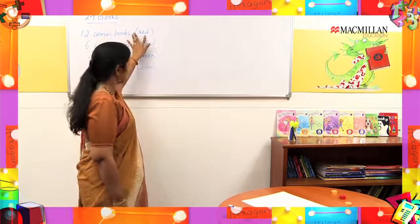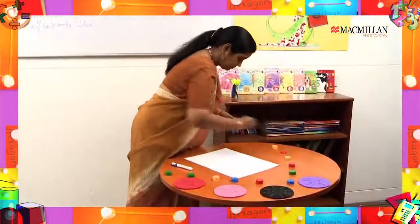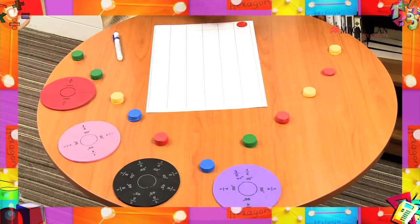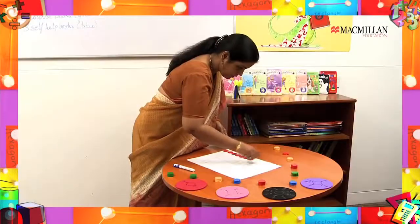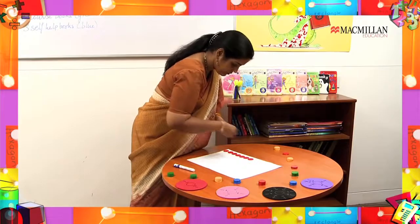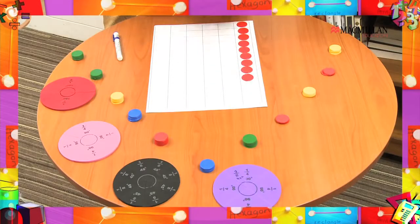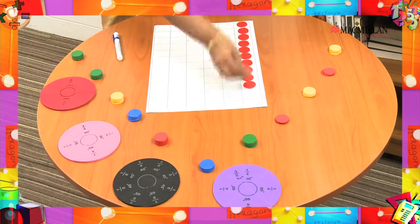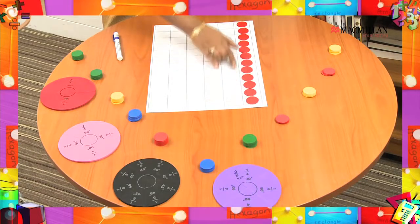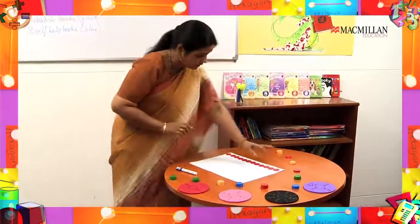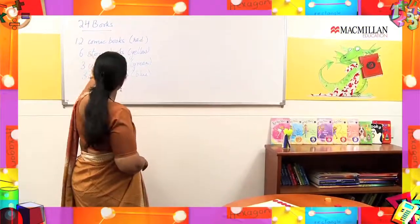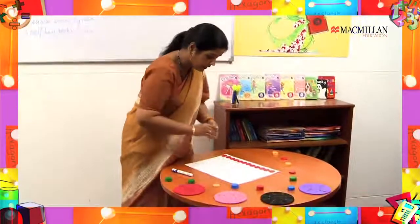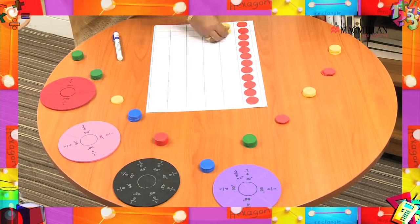I am going to represent my 12 comic books by red counters, so I place 12 red counters here — one, two, three, four, five, six, seven, eight, nine, ten, eleven, twelve. These 12 red counters represent my 12 comic books. Then I have six story books and I am representing them by yellow counters — one, two, three, four, five, six.